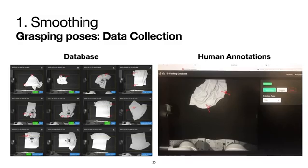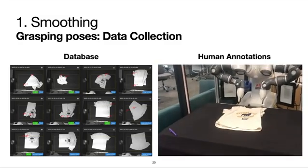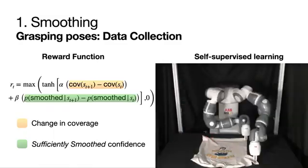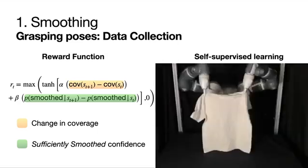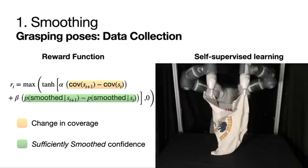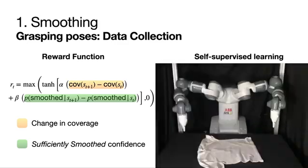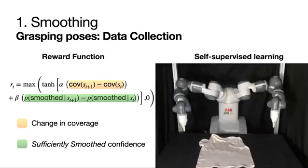We design a database and an annotation software and start data collection by providing labels manually. Then we iteratively train a self-supervised data collection neural network, interleaving training and execution for data collection. The robot labels are given with a reward that takes into account both the change in coverage and the change in the classifier's confidence.